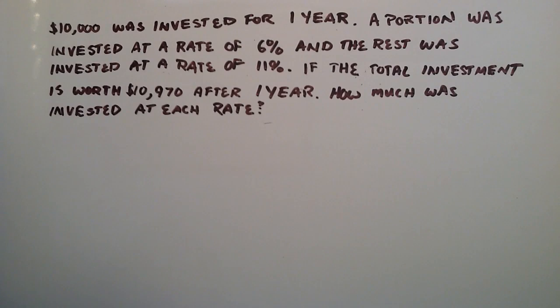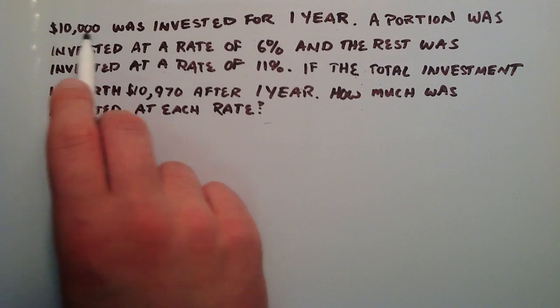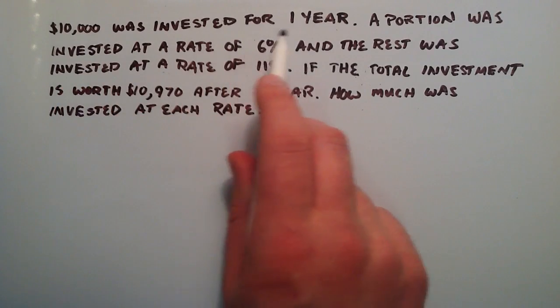In this tutorial we're going to be doing a simple interest story problem. So basically we have $10,000 and we're going to invest it for one year.